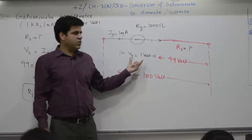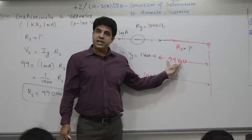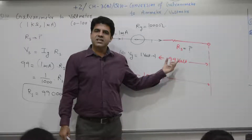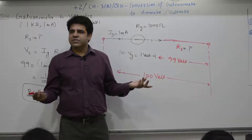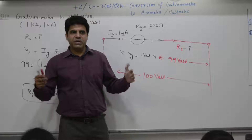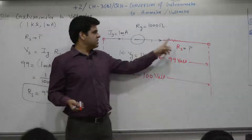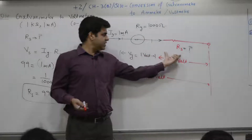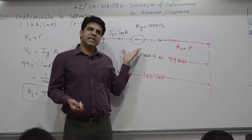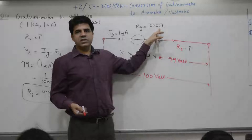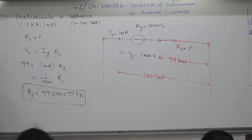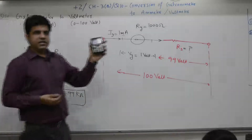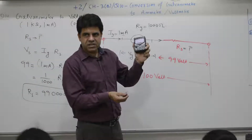This voltage is 99 times the galvanometer voltage. Since the current flowing is the same, resistance should also be 99 times. If this resistance is 1 kilo ohm, then R_s is 99 kilo ohm. So you convert a galvanometer into a voltmeter by placing appropriate resistance in series.